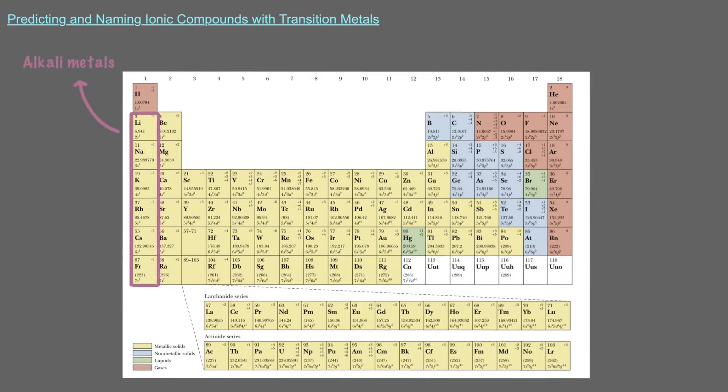In a previous video, we learned how to name ionic compounds made from alkali metals and alkaline earth metals, the metals in the first two groups of the periodic table. Let's review quickly.